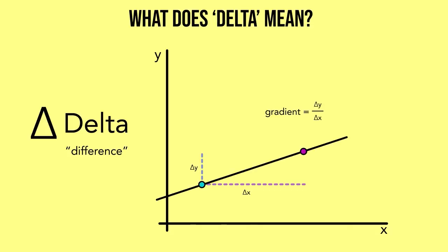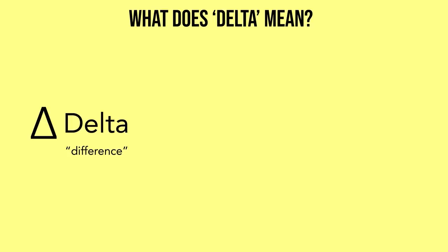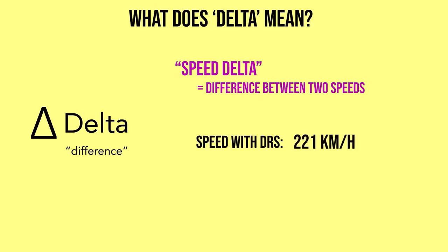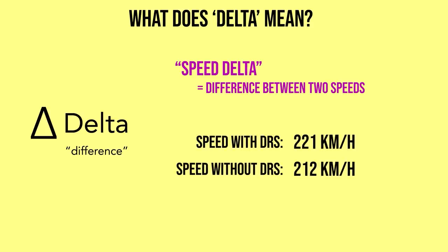Back to F1. In F1, delta generally refers to differences between two values. For example, you might hear people talk about speed delta — maybe between running with DRS and without. If opening DRS increases your max speed by 8km/h, then you're talking about an 8km/h speed delta. All pretty simple really.